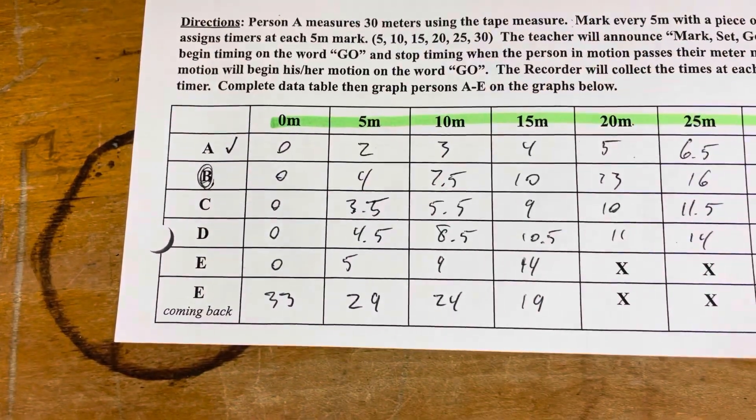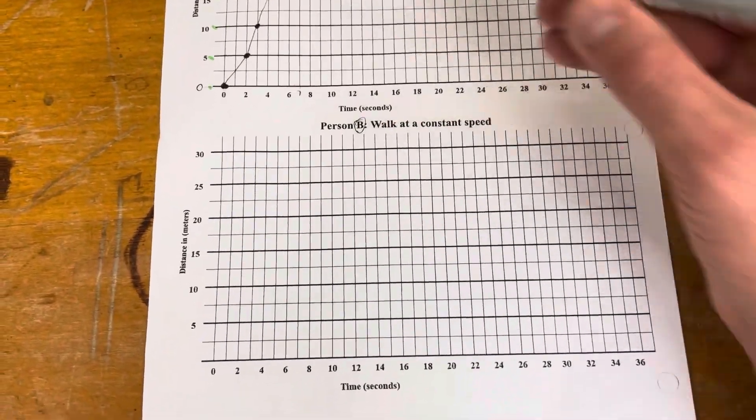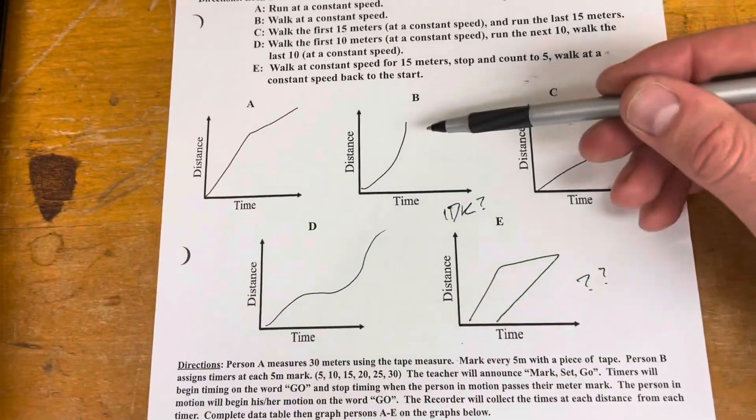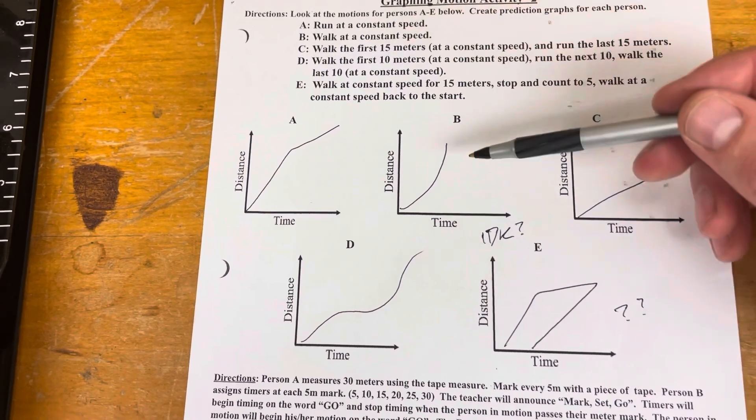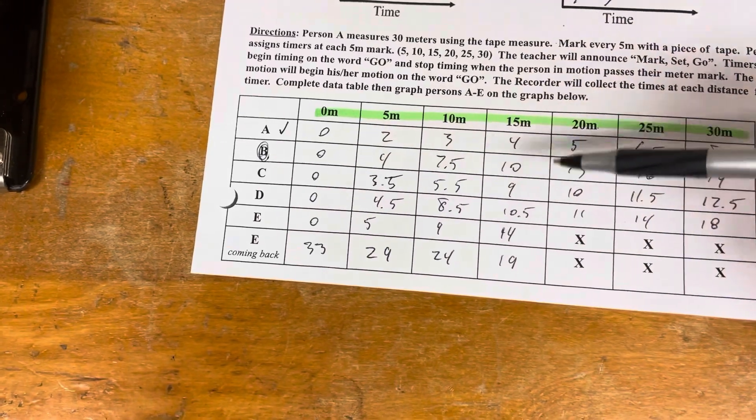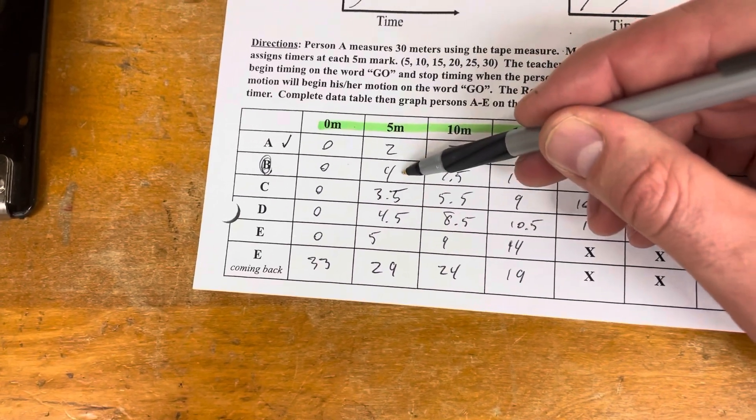Now I'm going to move on to person B. All of the data in the person B row, that's where I'm going to graph everything. This is where the person was walking, so the graph is going to look slightly different. We're going to check if they were walking at a constant speed. Now we're going to use these points on that second row and do 5 meters and 4 seconds.